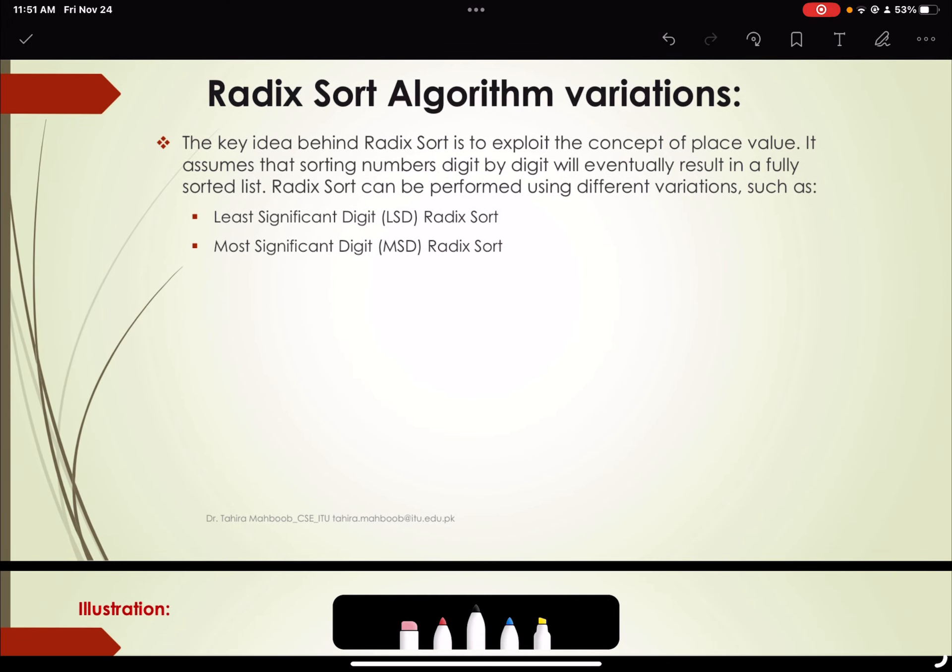The key idea behind Radix sort is to exploit the concept of place value. So there are two variations that are available. Either you can consider the least significant digit Radix sort or the most significant digit Radix sort. So you are going to have a comparison digit by digit by using any of those techniques. We are going to focus on the least significant digit technique in today's lecture.